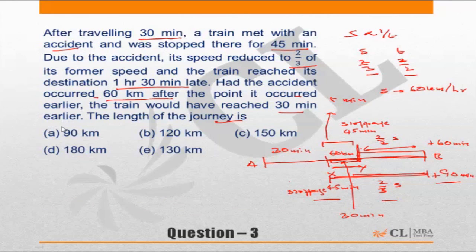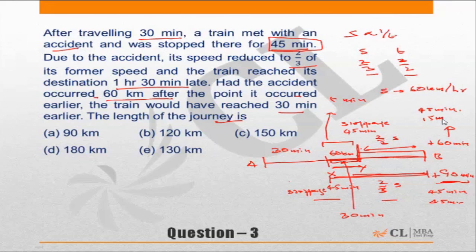Out of the 90 minutes of total delay when the accident is at X: 45 minutes is due to stoppage and 45 minutes is due to reduced speed. Similarly, out of the 60 minutes of delay when the accident is at Y: 45 minutes is due to stoppage and 15 minutes is due to reduced speed. The reduction in speed leading to a 30-minute loss over the 60 km stretch XY does not change between scenarios.